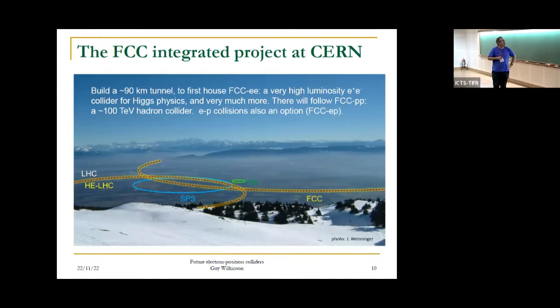Let me introduce the FCC, the FCC Integrated Project at CERN. Taken from the top of the Jura in winter, here is the LHC. The FCC tunnel would be between 90 and 100 kilometers stretching over the Geneva Plain. This would first house FCC-ee, a high luminosity e+ e- collider. Then eventually you'd install in this tunnel a hadron collider which could go up to energies of 100 TeV or so.